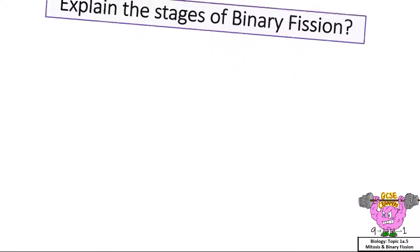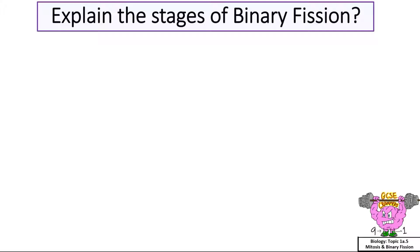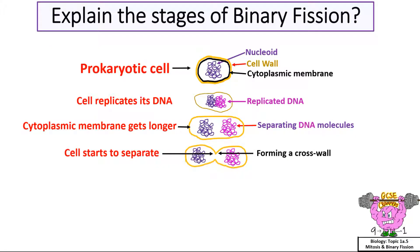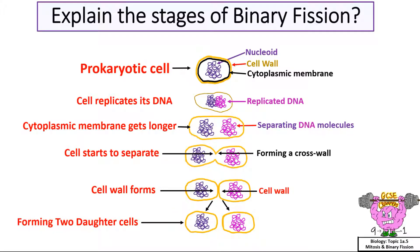Explain the stages of binary fission. It starts with a prokaryotic cell that has a nucleoid, a cell wall, and a cytoplasmic membrane. Then the cell replicates its DNA. Next the cytoplasmic membrane gets longer, separating the DNA molecules. The cell starts to separate, forming a cross wall. Then the cell wall forms completely, separating to form two daughter cells.